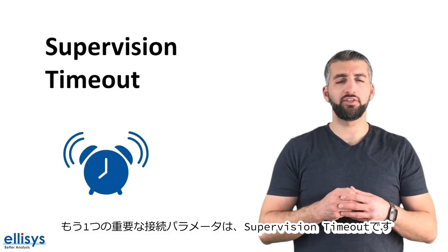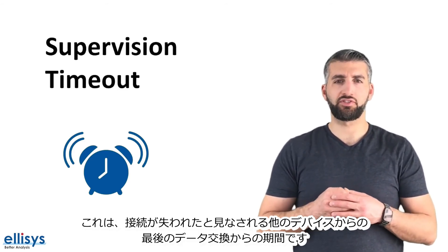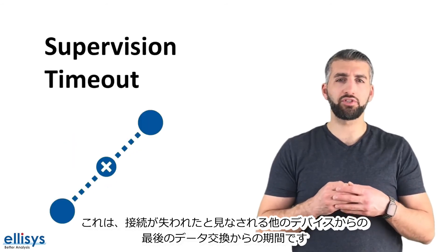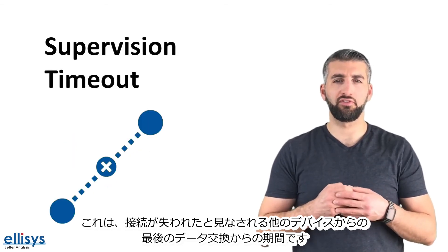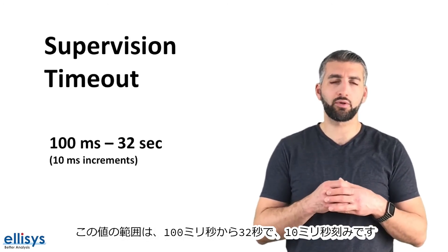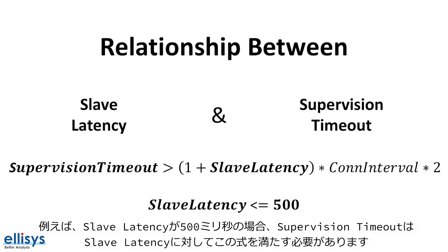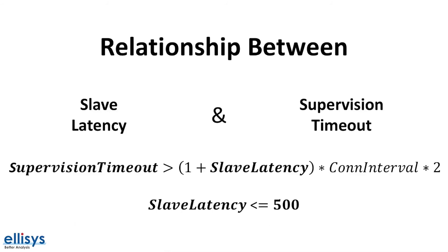Another important connection parameter is the supervision timeout. This is the period of time since the last data exchange from the other device at which the connection is considered lost. This value ranges from 100 milliseconds to 32 seconds in increments of 10 milliseconds. It's important to note that there's a relationship and restrictions on both the slave latency and the supervision timeout values. The supervision timeout needs to satisfy a specific equation in relation to the slave latency, given that the maximum slave latency value is 500.